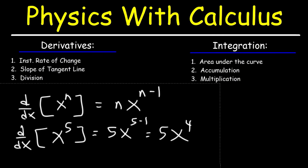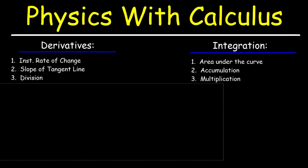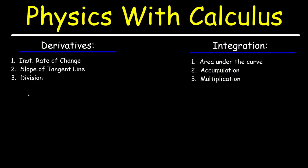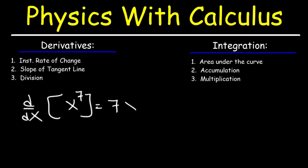Some of you might already know this, but this is just a quick refresher. If we want to find the derivative of x to the 7th power, it's going to be 7x to the 7 minus 1, which is 7x to the 6th power.